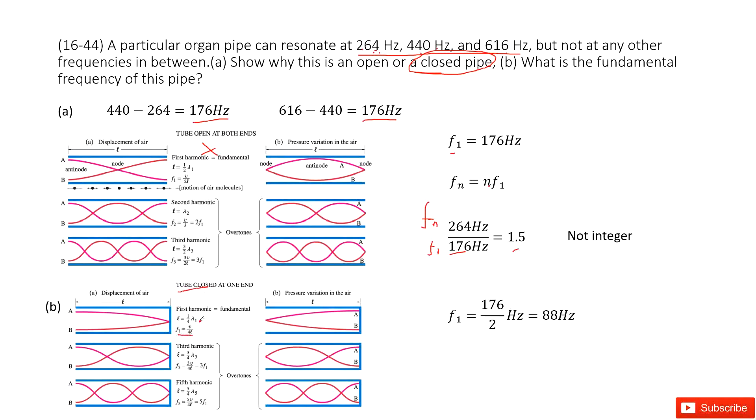A tube closed at one end has the first harmonic (fundamental frequency), third harmonic, and fifth harmonic. For this tube, the fundamental frequency F1 is the difference divided by 2.